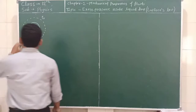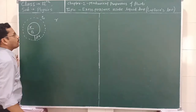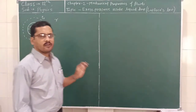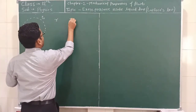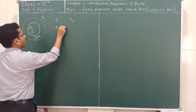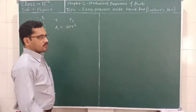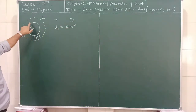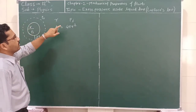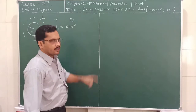For that, consider a liquid drop of radius R. In this case, the pressure inside the liquid drop is equal to Pi. And the surface area A1 is equal to 4πR². A liquid drop of radius R having the pressure Pi and the surface area is equal to 4πR².